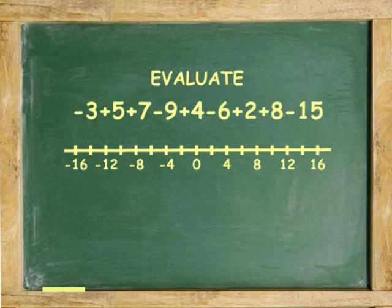For example, evaluate negative 3 plus 5 plus 7 minus 9 plus 4 minus 6 plus 2 plus 8 minus 15. Starting at zero, move 3 to the left because it is negative 3, 5 to the right, 7 right, 9 left, 4 right, 6 left, 2 right, 8 right, 15 left. The answer is negative 7.